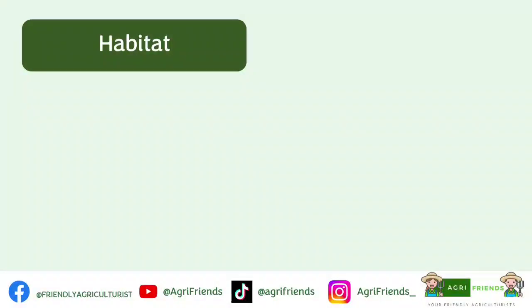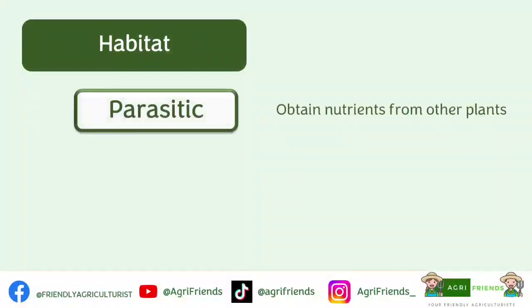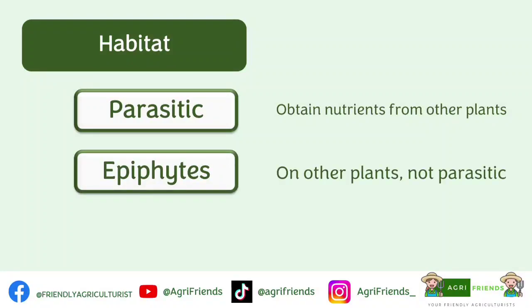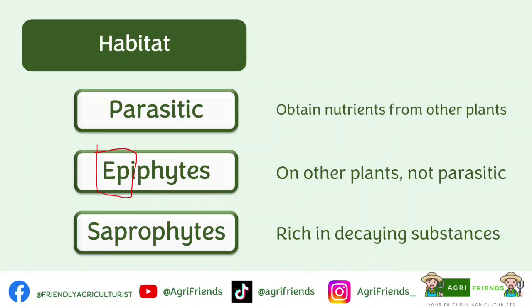There is also a special classification of plants based on habitat. Parasitic plants obtain their nutrients from other plants — an example is the rafflesia; they do not have leaves and are not photosynthetic. Epiphytes grow on top of or on another plant — 'epi' meaning on top of — such as orchids, but they are not parasitic. Lastly, saprophytes grow in places with decaying organic matter — from the Greek 'sapros' meaning rotten or putrid.